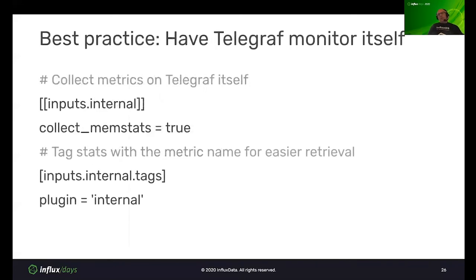Another best practice — stepping slightly outside AWS monitoring — is to have Telegraf monitor itself. If you're pulling in too many metrics, metrics are getting dropped, or you're getting errors, it's handy to have these Telegraf metrics already in InfluxDB so you can troubleshoot. To do this, simply add double bracket inputs.internal, with collect_memory_stats equals true. I also like to add a tag — plugin equals internal — so I know which metrics are coming from which Telegraf plugin. Good housekeeping to keep all your metrics straight.